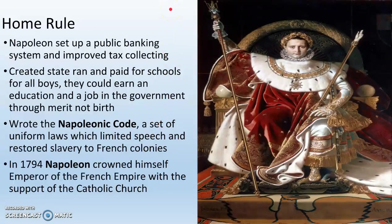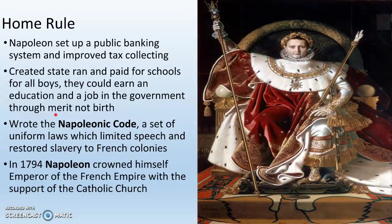Some of the reforms that Napoleon enacts as dictator of France: first, he sets up a public banking system and improves tax collecting — he needs money because he's about to go back to war. He creates state-run, paid-for schools for all boys. This is a huge deal — you've got public schools for really the first time in Europe. It's only for boys, but it is a step in the right direction. Boys could go and earn an education free of charge, and if they do really well in school, they could even get a job in the government. The government is being built around merit — how smart you are, how successful you are — and not by birth, not because your dad was a duke or a count.